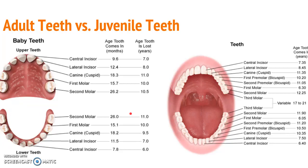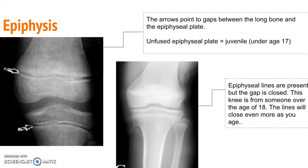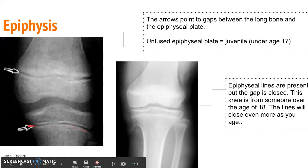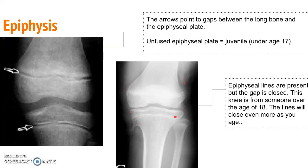Juveniles will have far fewer teeth than adults, but all of their teeth are sitting just above and below their jawline in the skull, waiting to move into their final resting place. The epiphyses or growth plates in long bones: in the picture on the left you can see an open growth plate with an actual gap between the two pieces of bone, whereas in the right picture the gap has closed. The left is probably about age 17 and the right is in their early 20s; as you age, those lines will disappear even more.